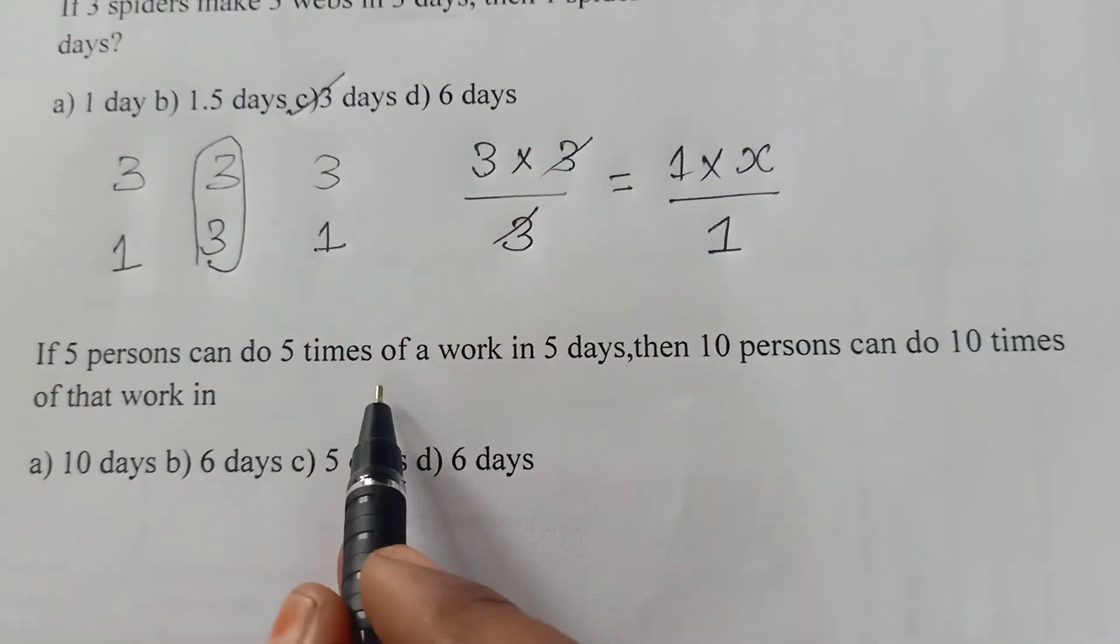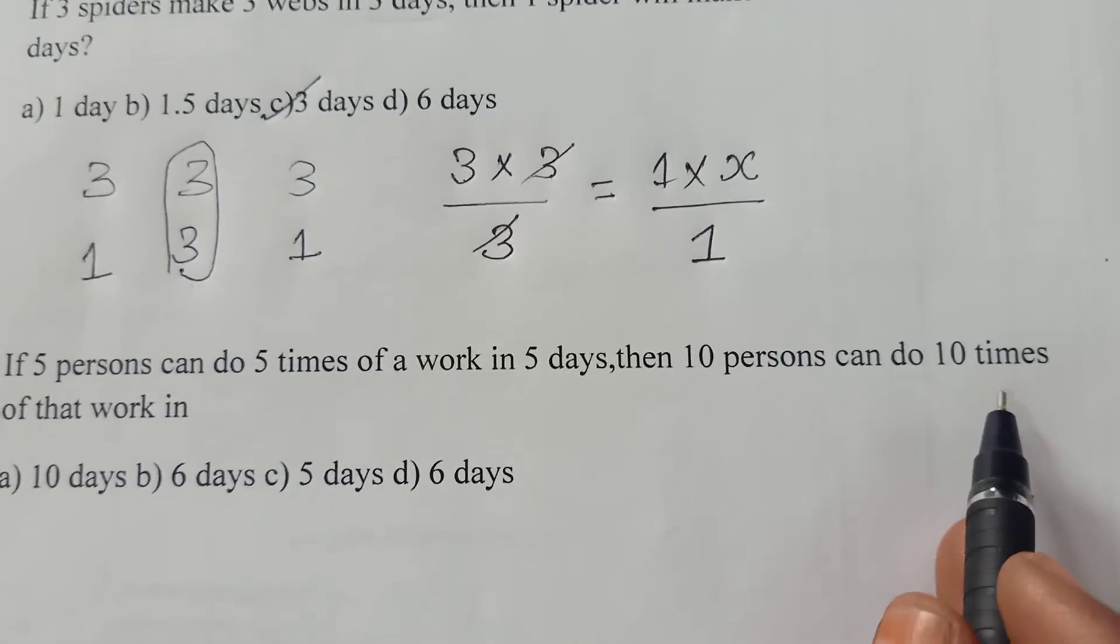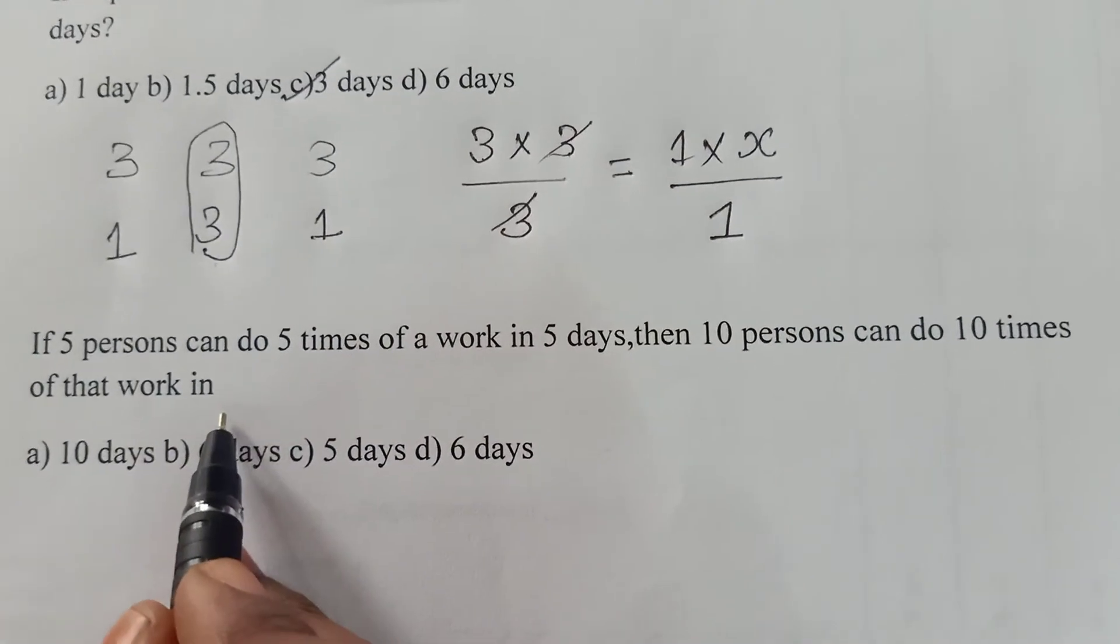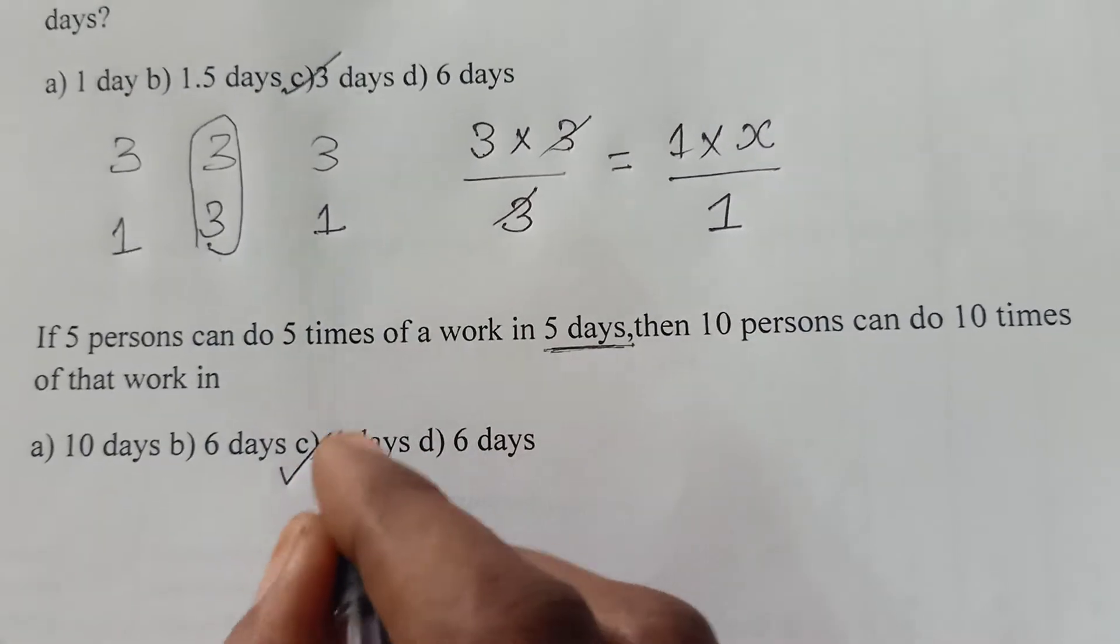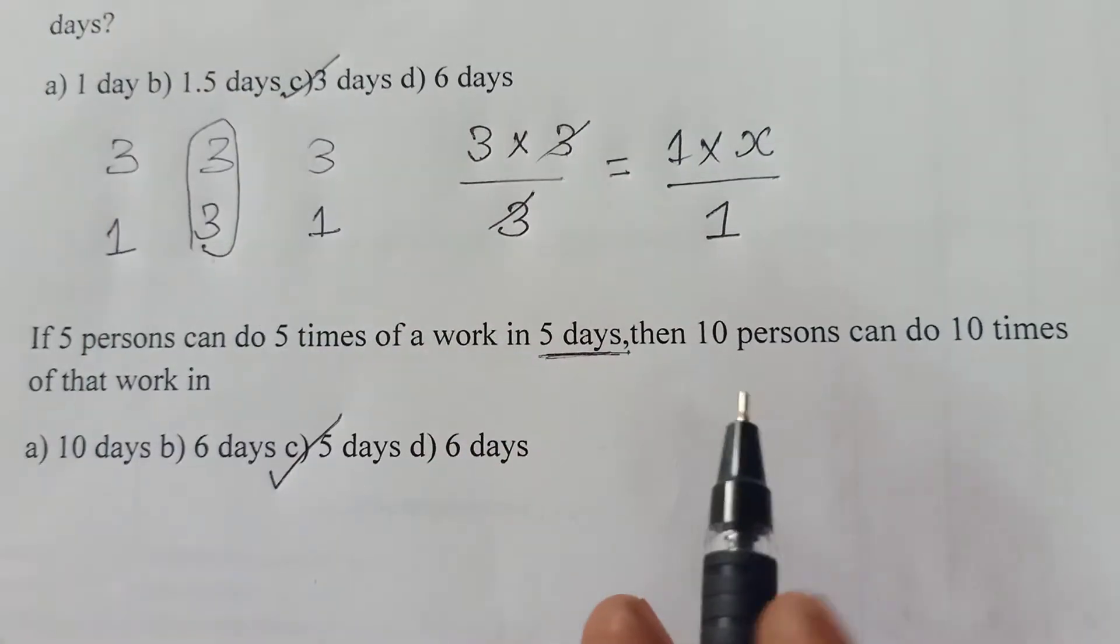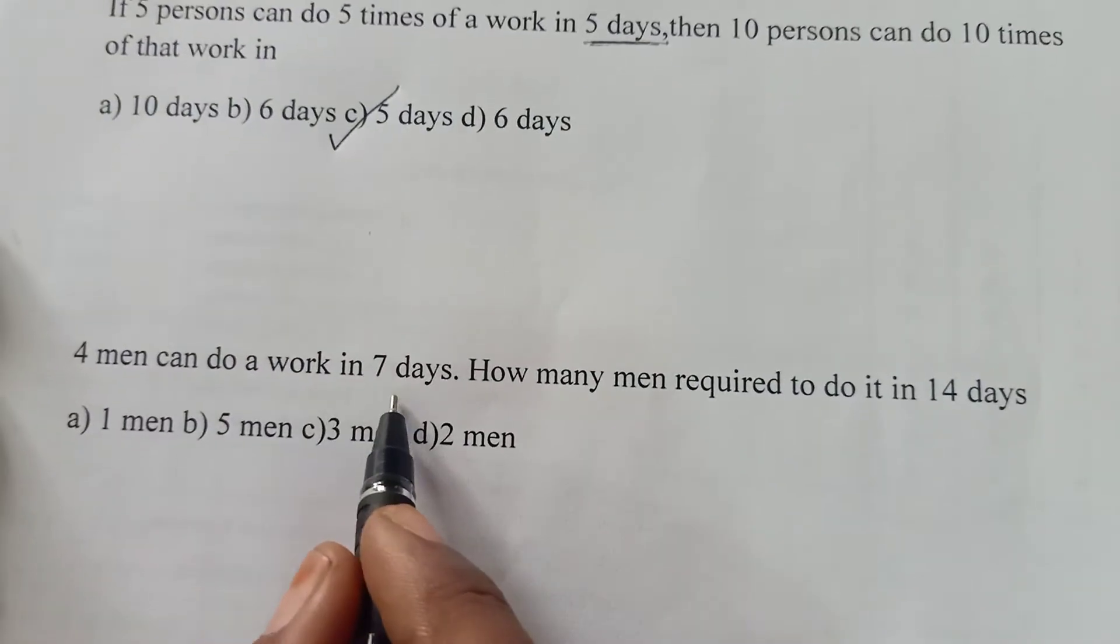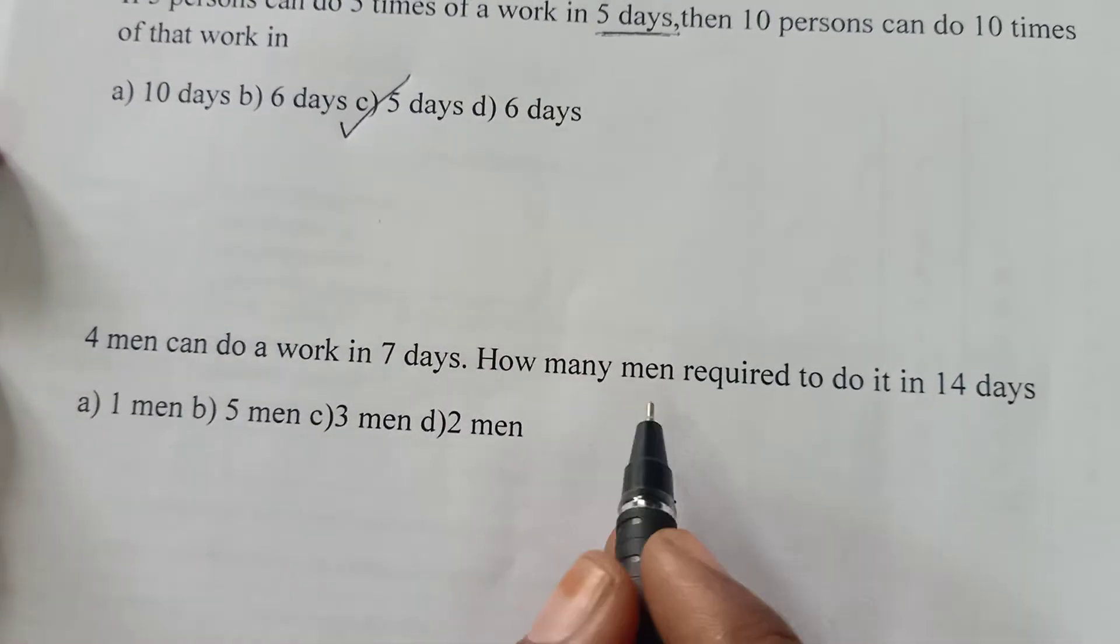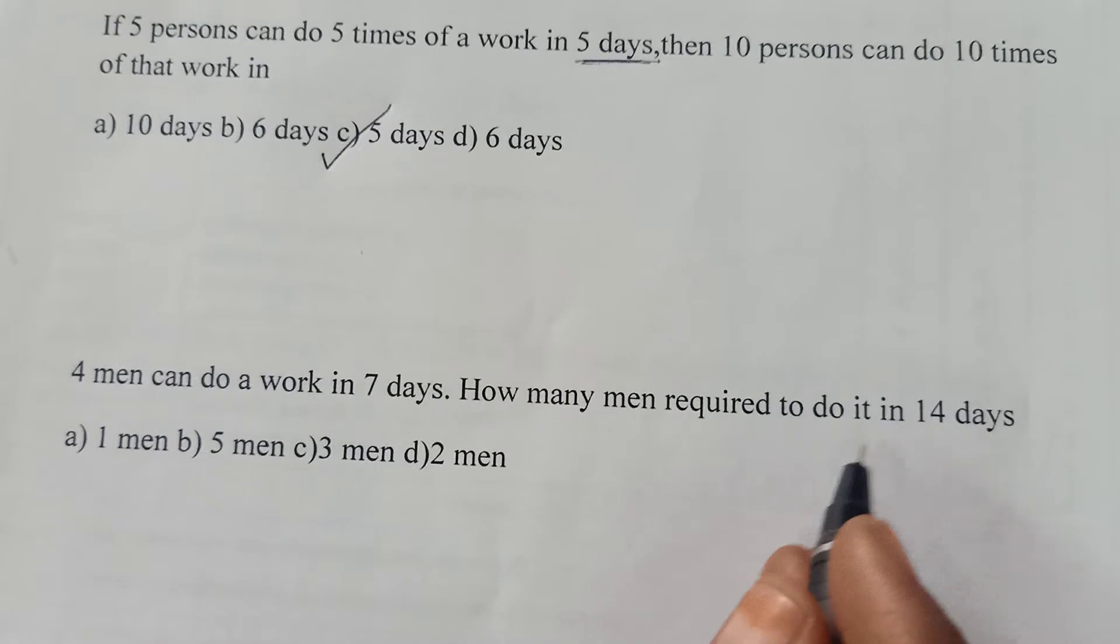We'll move to the next question. If 5 persons can do 5 times of work in 5 days, then 10 persons can do 10 times of that work in... As I said earlier, days and minutes will never get changed. For this question also, my answer will be 5 days. For this question also you can use the formula. We'll move to the third question. 4 men can do a work in 7 days. How many men are required to do it in 14 days?